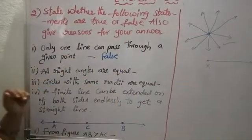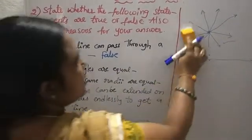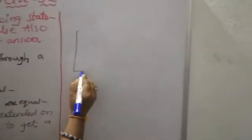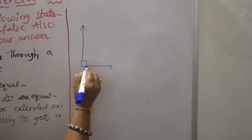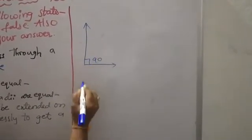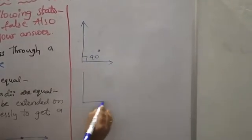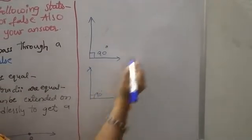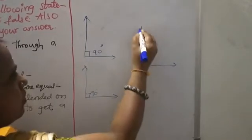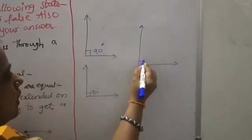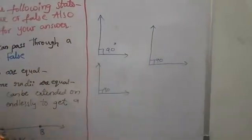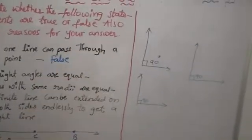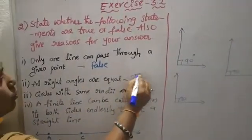Second statement: all right angles are equal. A right angle is 90 degrees. All right angles are 90 degrees, so all of these are equal. It is true.